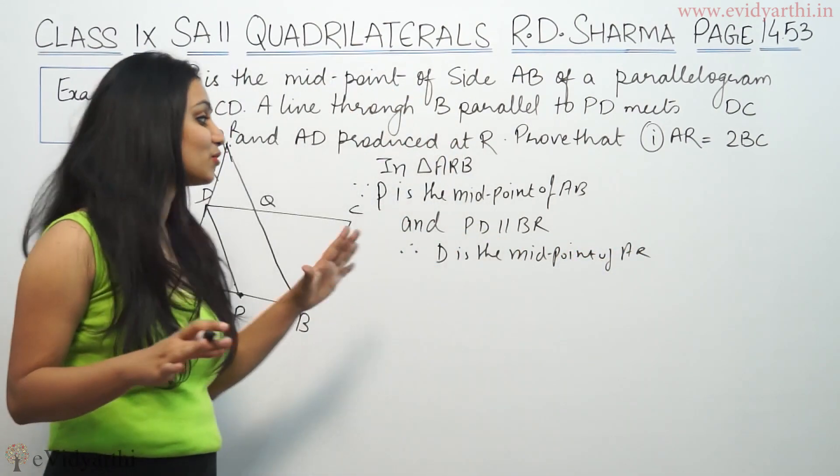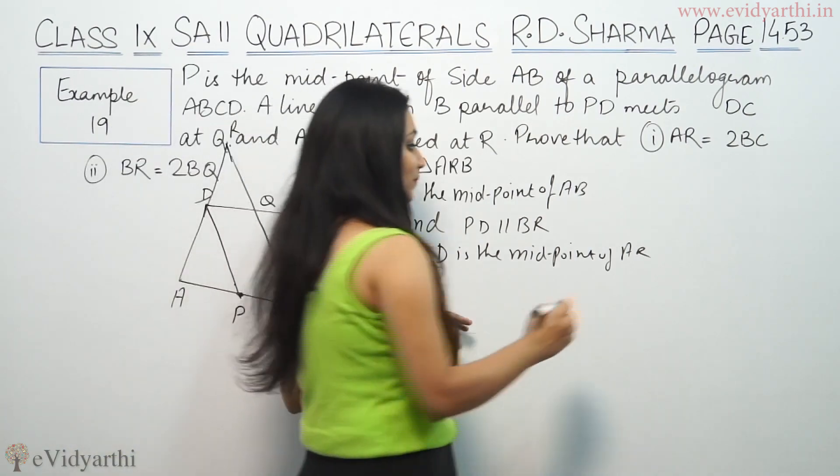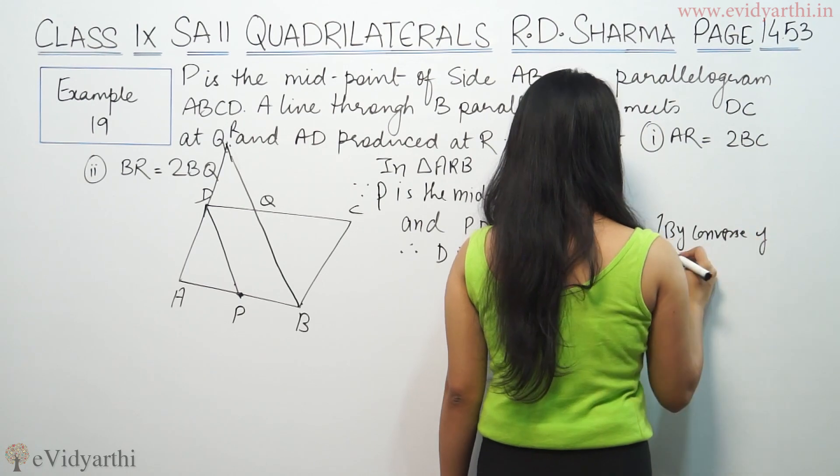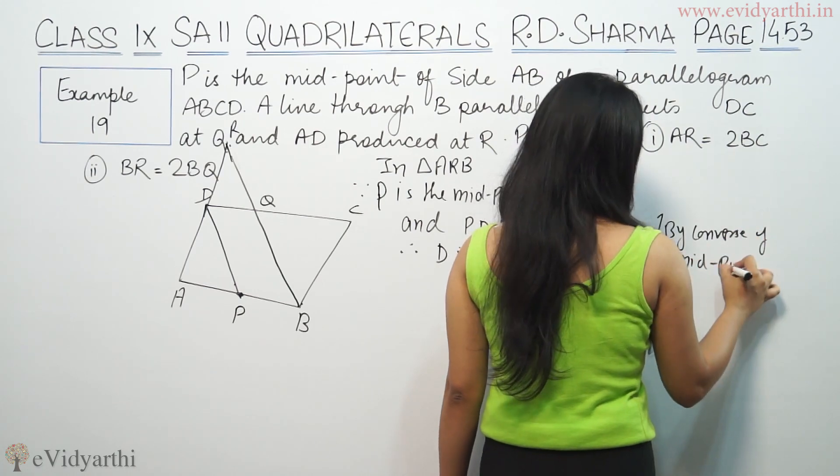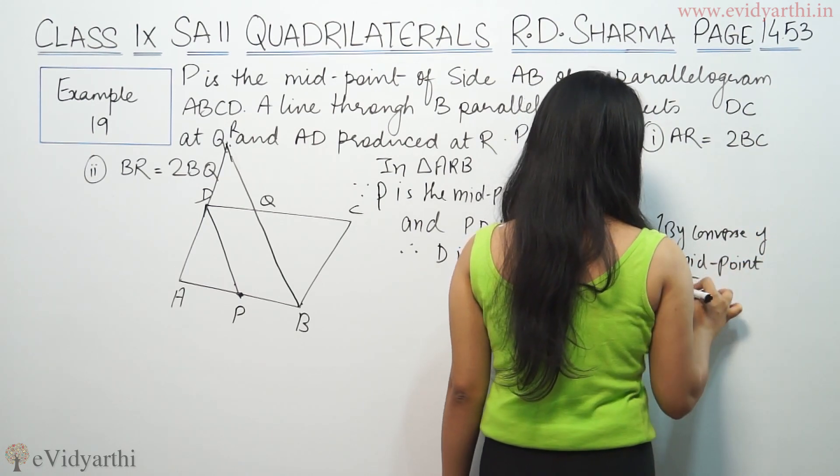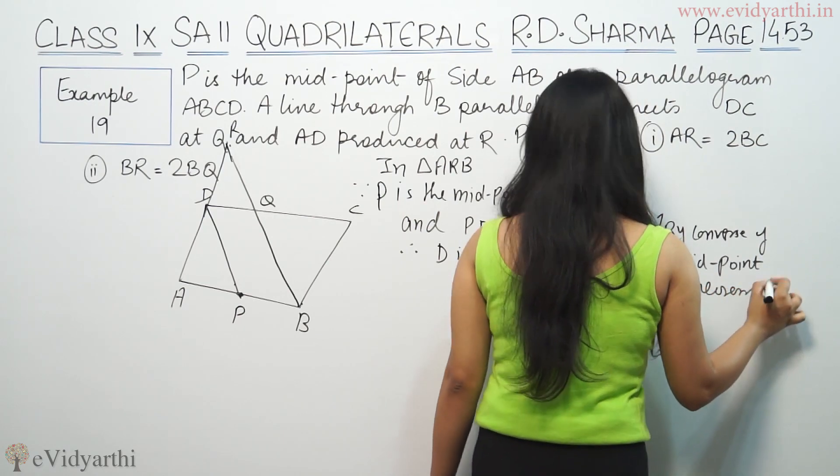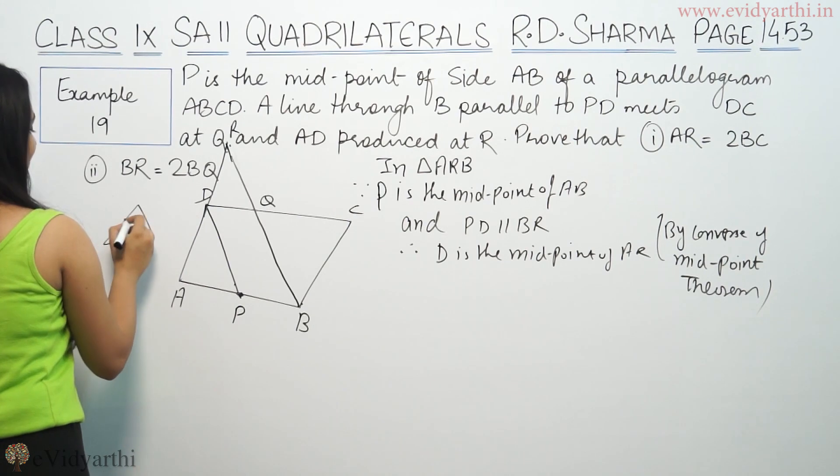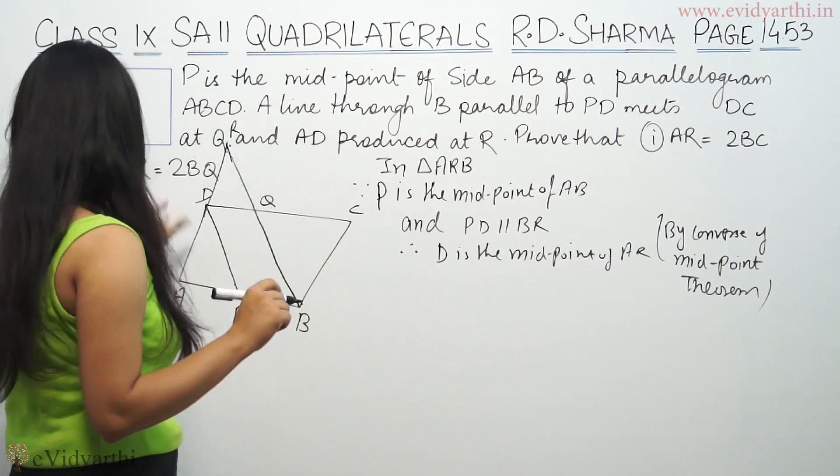This is true by converse of midpoint theorem. This means that inside a triangle there is a midpoint given and a line parallel drawn on the third side, so the other side will be bisected at the midpoint.